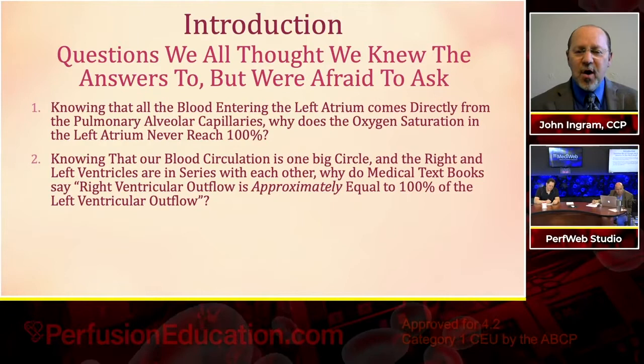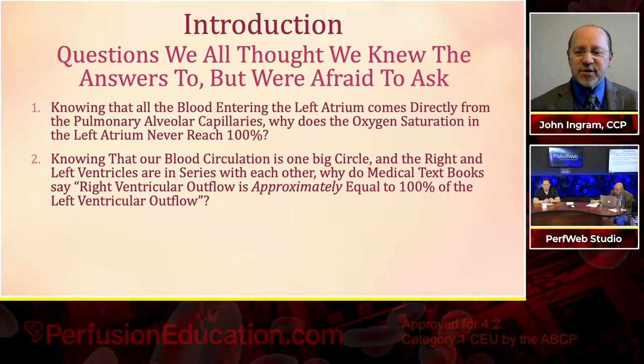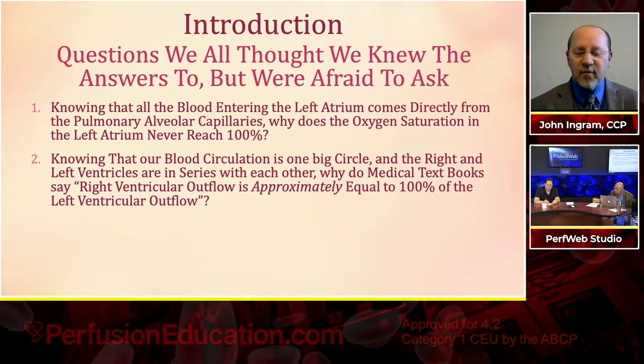Question number two: knowing that our blood circulation is one big circle — hence the name circulation — and the right and left ventricle are in series with each other, one feeding into the other, why do medical textbooks say right ventricular output is approximately equal to 100% of the left ventricular outflow?